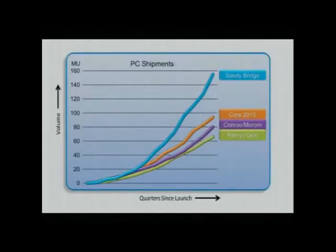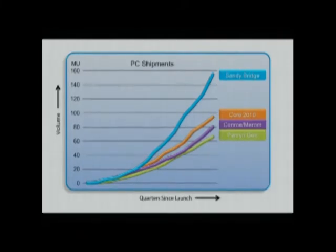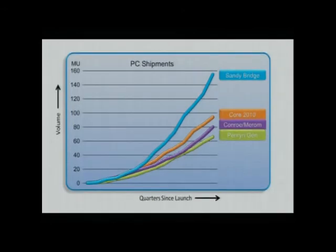I'll walk through this for a minute. What I'm showing on the x-axis is the time since launch of a particular CPU from Intel, and on the y-axis is volume in millions of units of systems — computers built on that CPU. I'm showing four generations of Intel CPU. SandyBridge is the processor that was the mainstream laptop and desktop CPU from Intel in 2011.